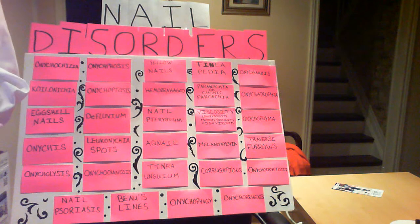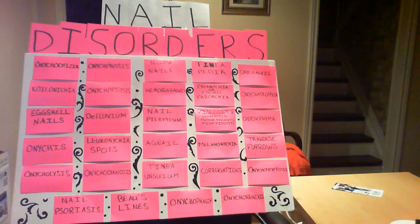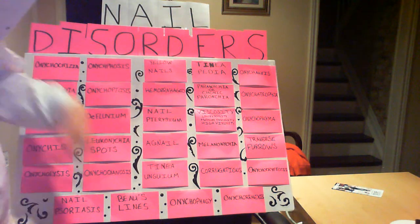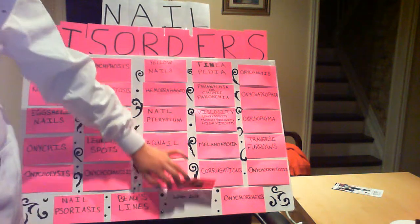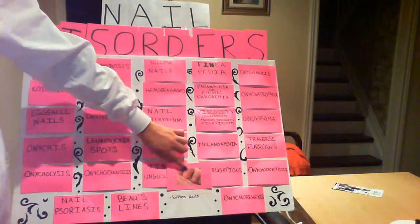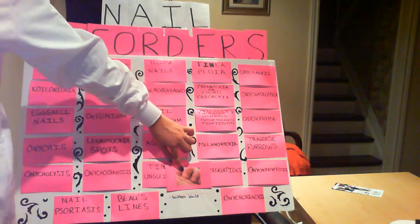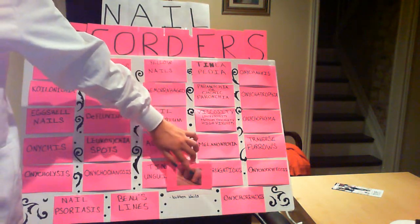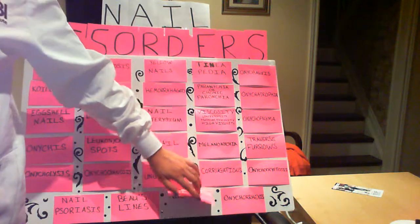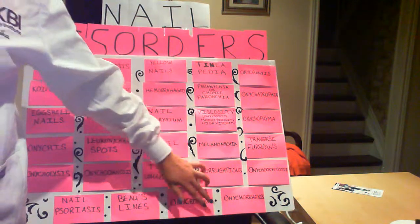Those lines or traverse furos are visible depressions running across the width of the nail plate. And then we have onychophthagy, which is very common — it's bitten nails. People that bite their nails, very common.